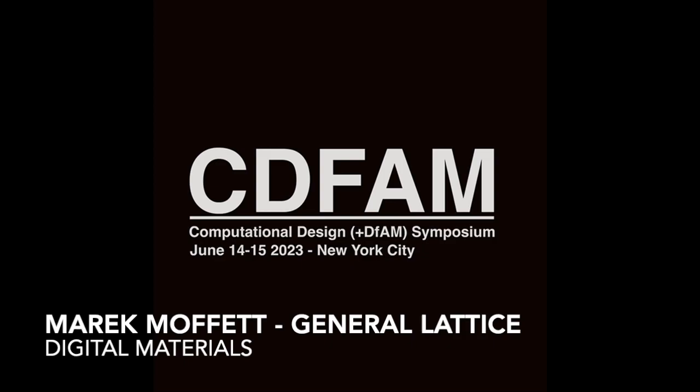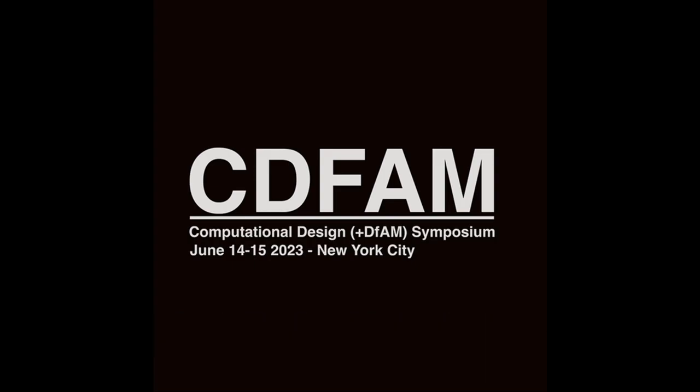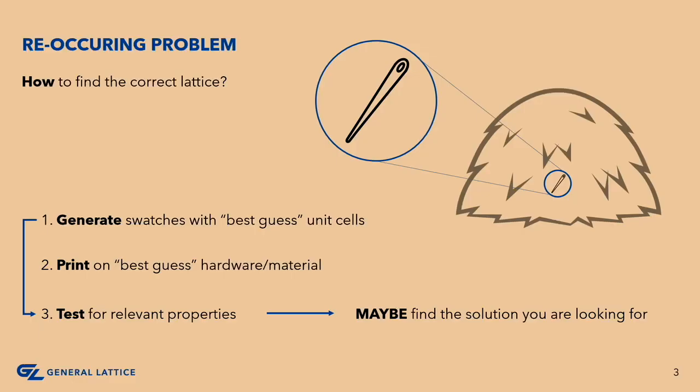We would run into this process over and over again: generate swatches with the best-guess unit cells, print on best-guess hardware and material combinations, and ultimately test for relevant properties. After this shotgun effect, you may or may not find your optimal solution. We refer to this as finding the needle in the haystack.